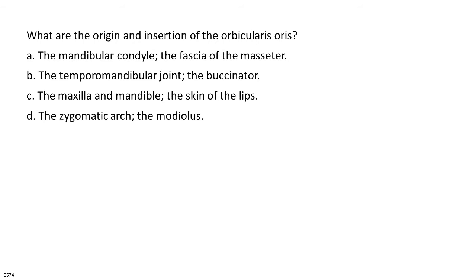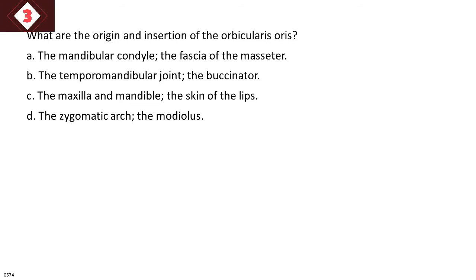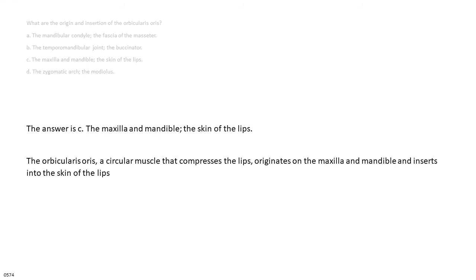What are the origin and insertion of the orbicularis oris? A. The mandibular condyle, the fascia of the masseter. B. The temporomandibular joint, the buccinator. C. The maxilla and mandible, the skin of the lips. D. The zygomatic arch, the modiolus. The answer is C, the maxilla and mandible, the skin of the lips. The orbicularis oris, a circular muscle that compresses the lips, originates on the maxilla and mandible and inserts into the skin of the lips.